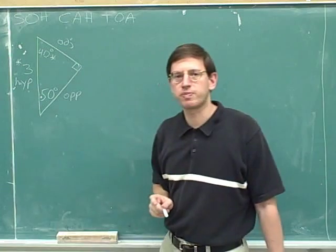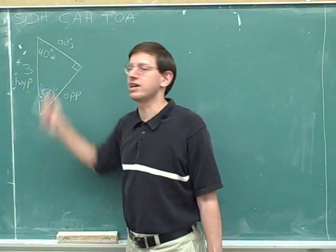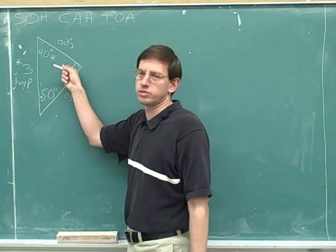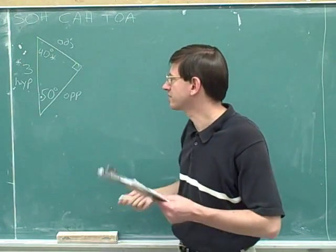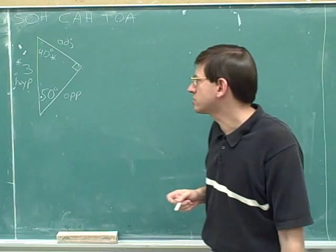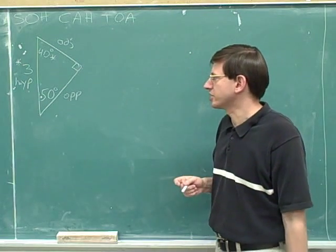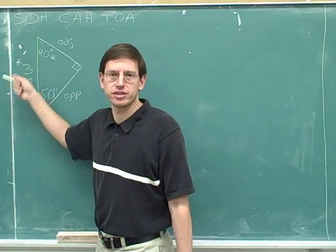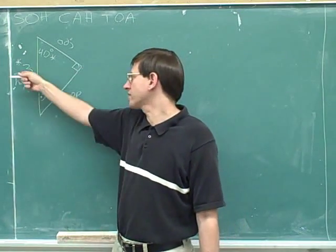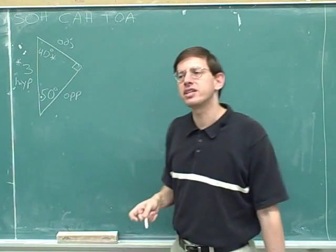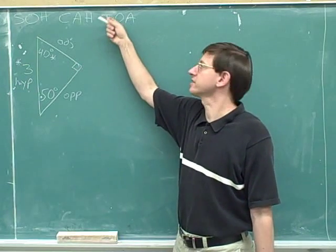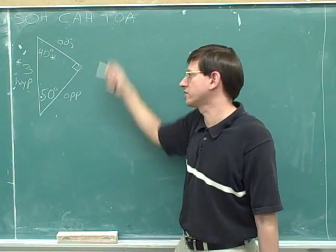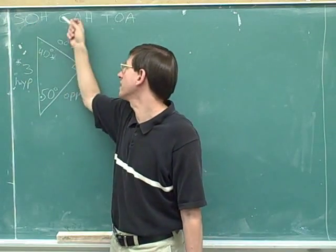Just like on the previous problems, I've given you the hypotenuse and asked you to figure out the two legs. We already knew that this angle was 90 degrees because of the little box. Now we're going to use trigonometric functions. We're going to try to use our number about the hypotenuse to figure things out. That means it's not going to be useful to use the tangent, because the tangent doesn't involve the hypotenuse. We need to use trig functions that do involve the hypotenuse, like sine and cosine.